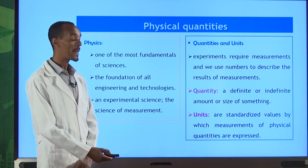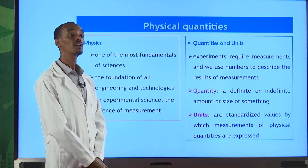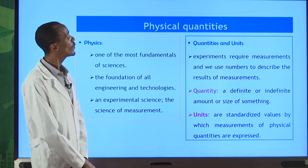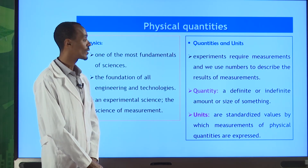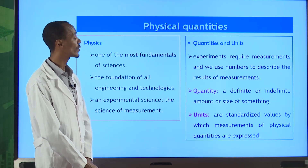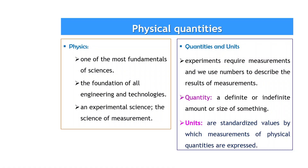When we are making experiments we need to take measurements. When we take measurements, we should use numbers to describe those quantities or the results of measurements. A quantity is the definite or indefinite amount or size of something we can make quantifiable. Units are standards or values which can be used in measurements to represent or express the physical quantities.